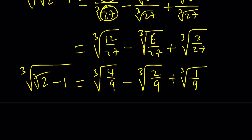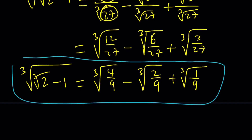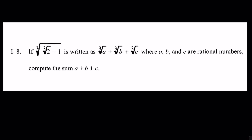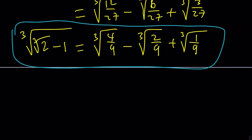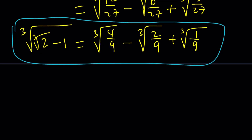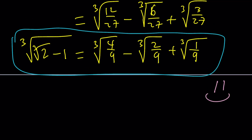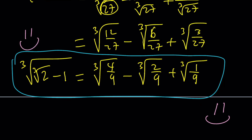The official ARML problem statement was: if the cube root of (∛2 − 1) is written as ∛a + ∛b + ∛c where a, b, c are rational numbers, compute the sum a + b + c. Here b is negative, so adding 4/9, −2/9, and 1/9 gives 3/9, which is one third. You can find ARML books and other Olympiad prep books on my Amazon page — link in the description. Thank you for watching, please comment, like, and subscribe.